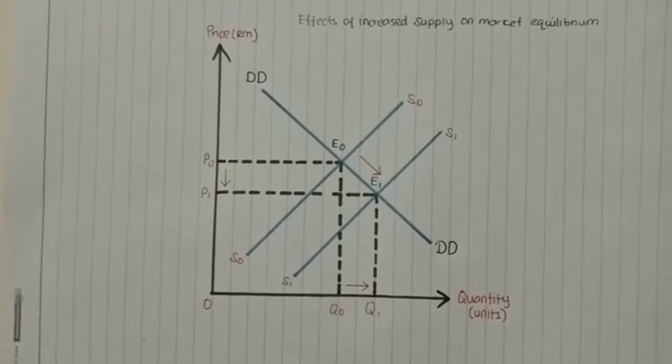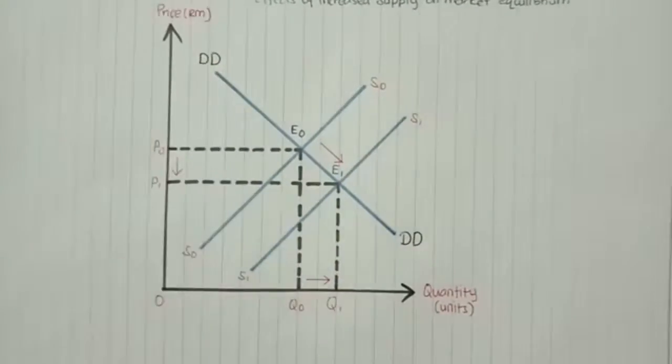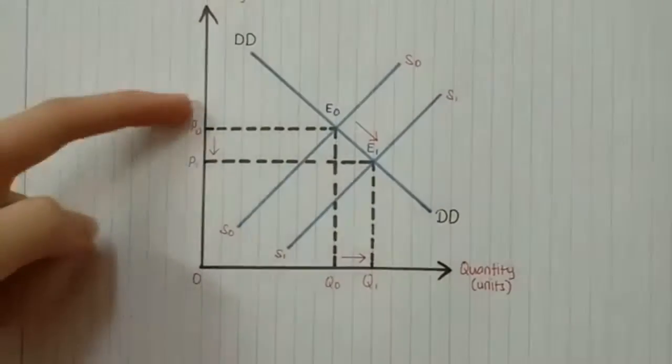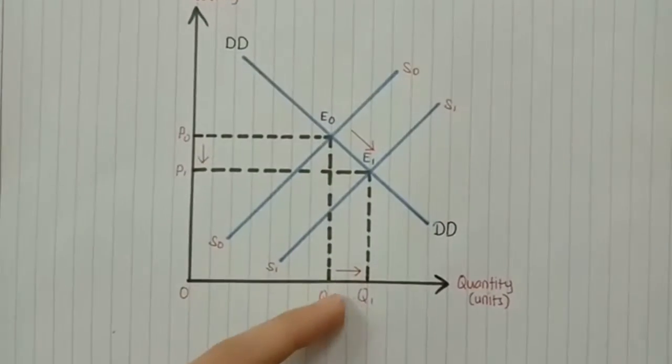Therefore, increased supply with a fixed demand will result in a decreased equilibrium price and increased equilibrium quantity.